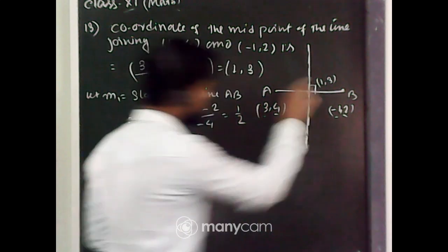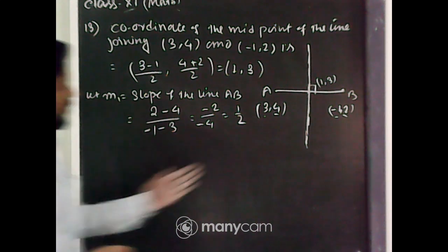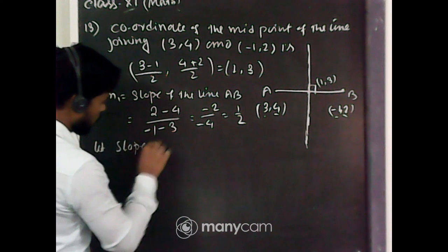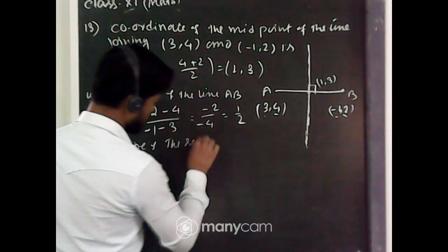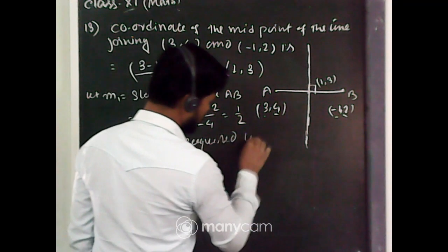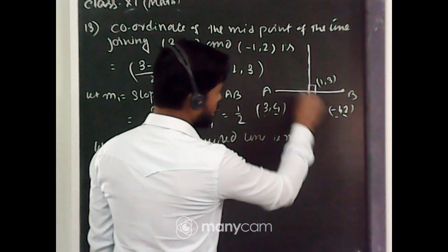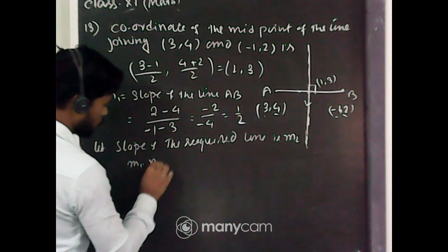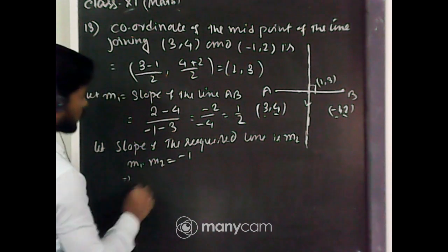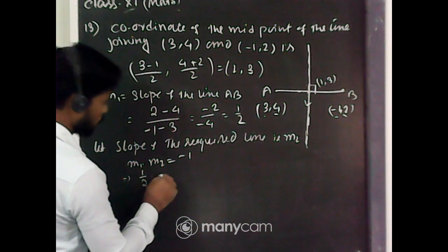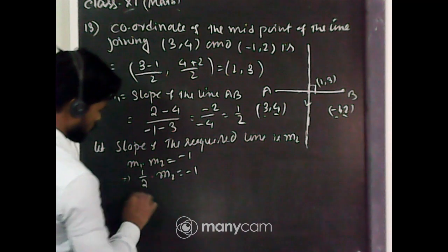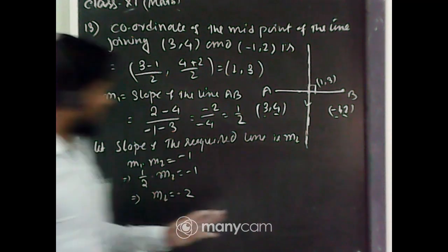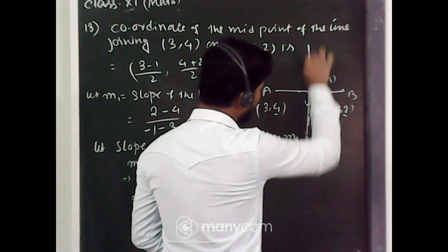Since the required right bisector is perpendicular to AB, using m₁ × m₂ = -1: (1/2) × m₂ = -1, so m₂ = -2. The slope of the required line is -2, and it passes through point (1, 3).